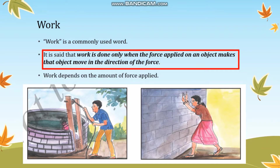Work is done only when the force applied on an object makes that object move in the direction of the force. To understand this, let us take the examples shown in the pictures. In the first picture, you can see a boy trying to pull water from the well. He is applying force towards himself, and the vessel of water is also moving towards him — it is being displaced towards him. This is a situation where work is done.